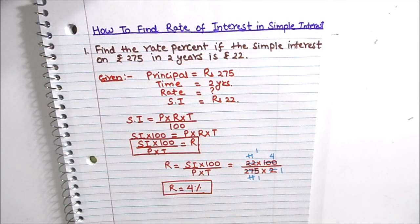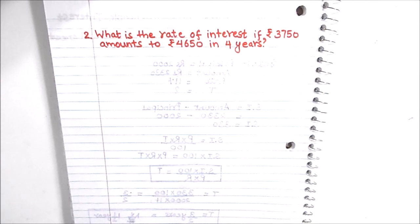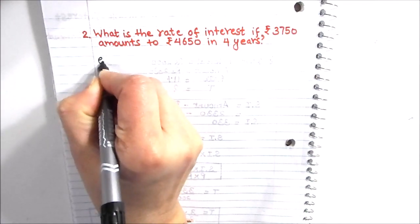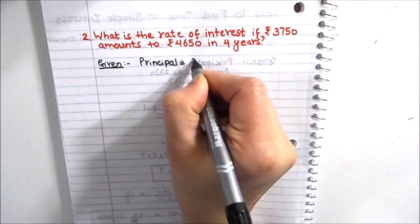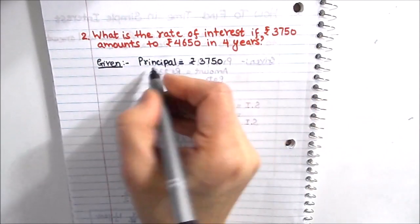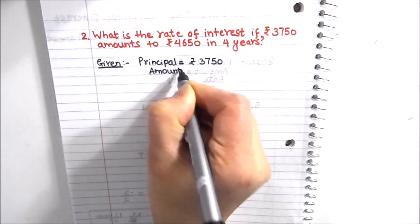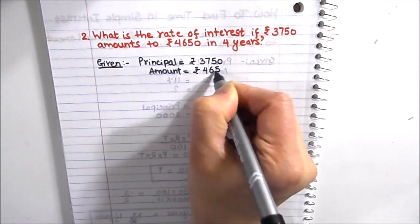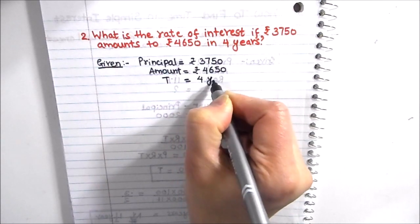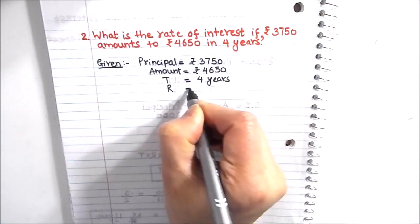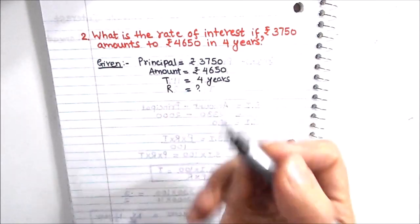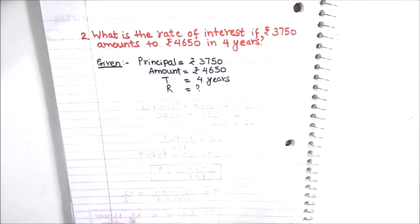Now let us solve the second example. The question is: what is the rate of interest if rupees 3750 amounts to rupees 4650 in 4 years? Here, the simple interest is not directly given, but the amount and principal are given. So we will first find the simple interest. Given: Principal = rupees 3750, Amount = rupees 4650, Time = 4 years. We need to find the rate of interest.